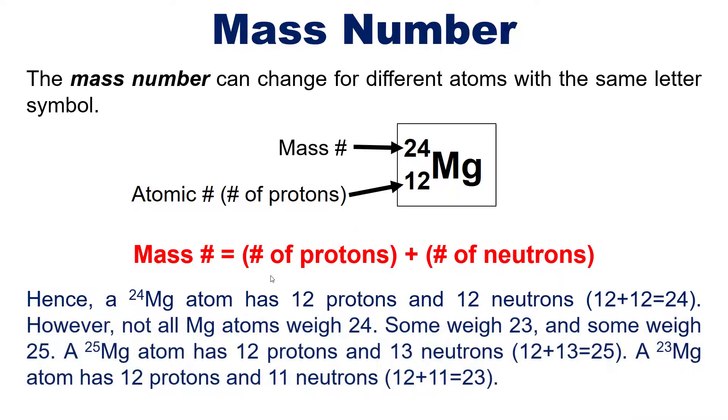However, not all magnesium atoms weigh 24. Some magnesium atoms weigh 23, and some weigh 25. A magnesium 25 atom has 12 protons and 13 neutrons, because 12 plus 13 equals 25, while a magnesium 23 atom has 12 protons. Now remember, the number of protons always stays the same, but the number of neutrons can shift.